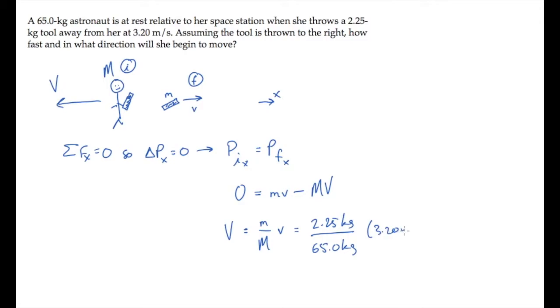Substitute numbers and calculate to see that the astronaut is moving 0.11 meters per second to the left, the way we've shown it up in the picture.